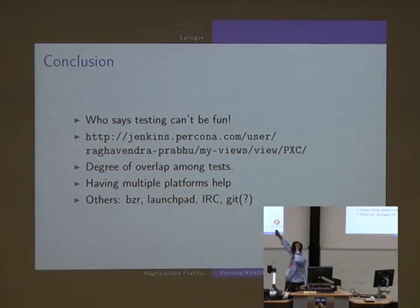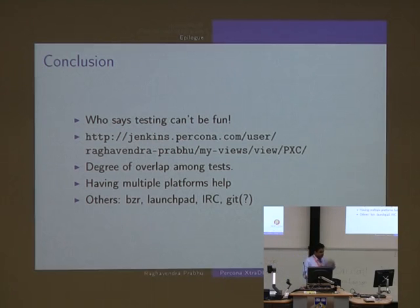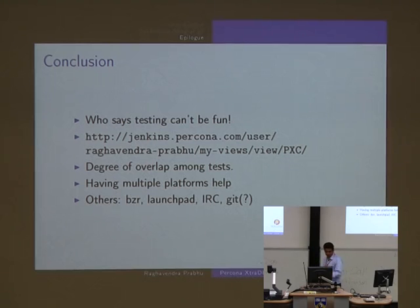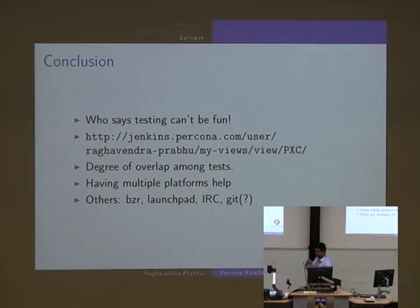There is a degree of overlap among tests, and that is very much intended - because many times a single test may miss a bug, so if it's missed in one place, we want it caught somewhere else. Having multiple platforms also helps, because a bug may not trigger on one platform but will trigger on another. Things can be different between CentOS, Debian, and Ubuntu, so it helps there as well.